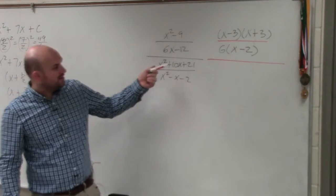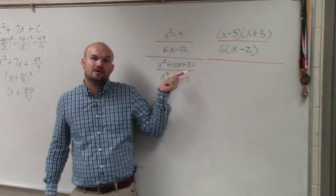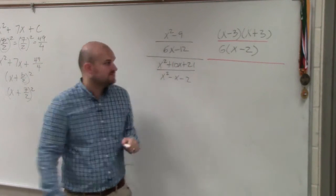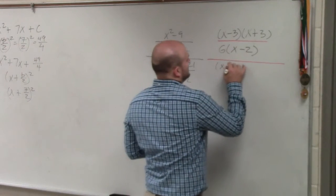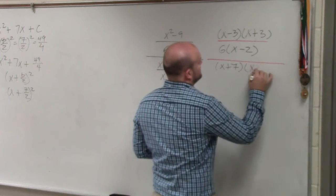In the denominator here, I need to determine what two numbers multiply to give me 21 and then add to give me 10. So I can factor that into x plus 7 times x plus 3.